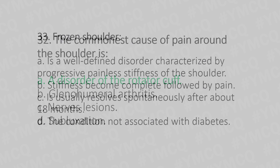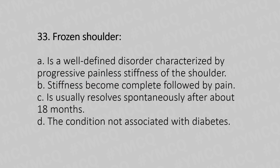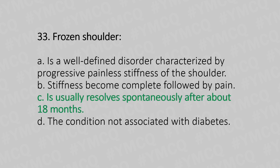Now let's move to question number 33. Frozen shoulder. Option A, is a well-defined disorder characterized by progressive painless stiffness of the shoulder. Option B, stiffness becomes complete followed by pain. Option C, is usually resolved spontaneously after about 18 months. Option D, the condition is not associated with diabetes. And the answer is Option C, it is usually resolved spontaneously after about 18 months.